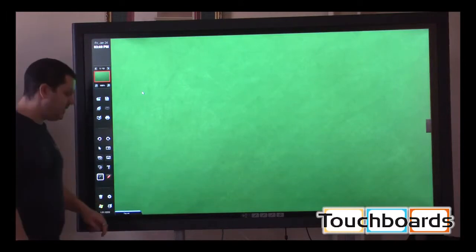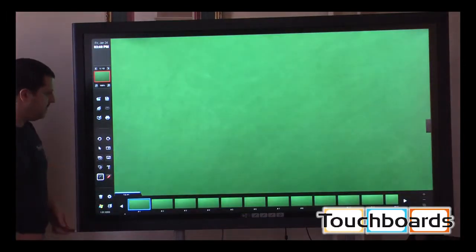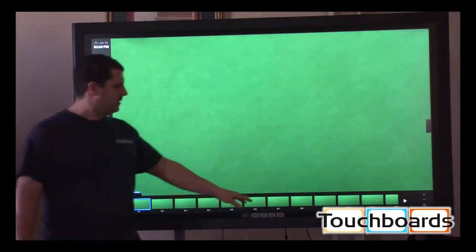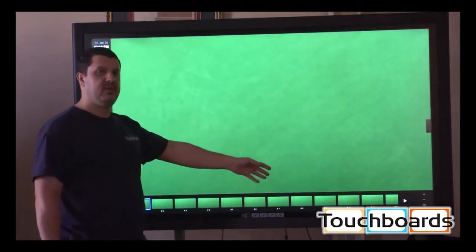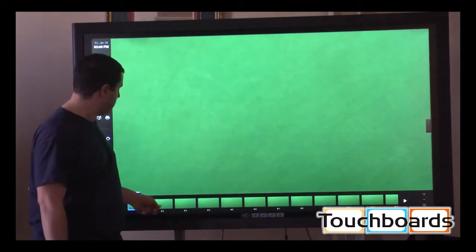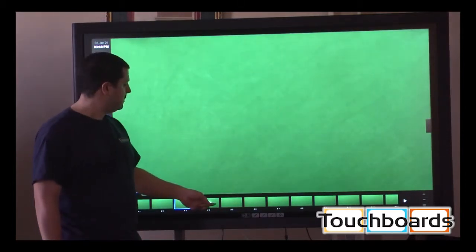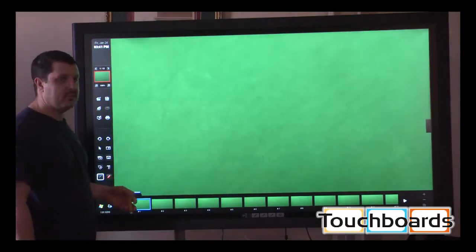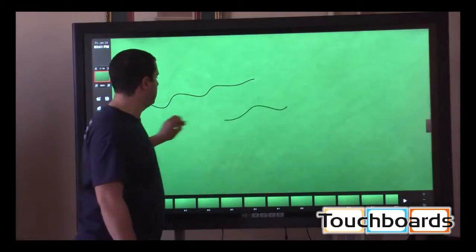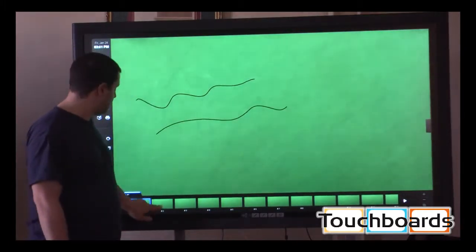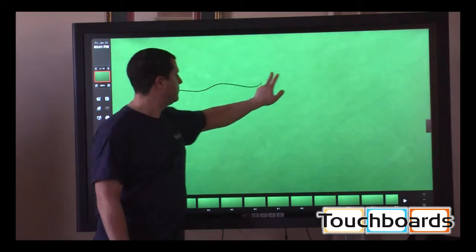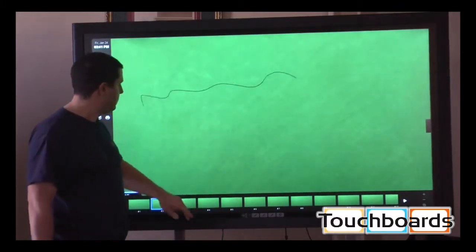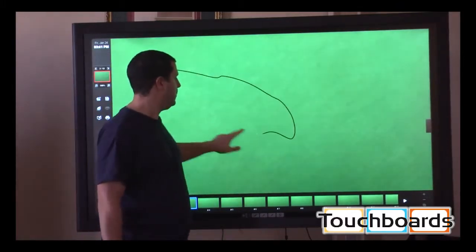What I want to show you now is the tab on the bottom. These are all the screens you have. You can have an infinite number of them. And right now, they're all the same. There's nothing on either one. But you can be on number one, draw something. Now, let's say we're done with that. We can just switch to number two. And we can write on there, switch to number three. Write on there.